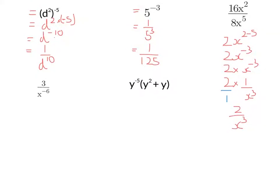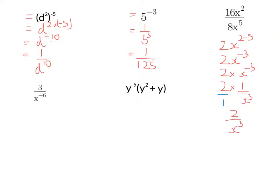Last two to look at. So 3 over x to the negative 6. So as before, I'd quite like to write without a negative power. So what I've really got here is 3 over 1 over x to the 6.